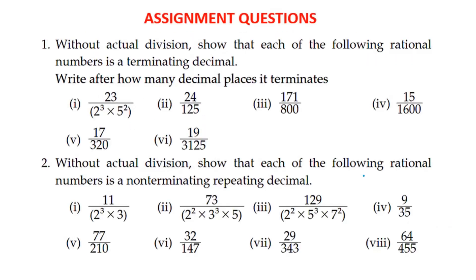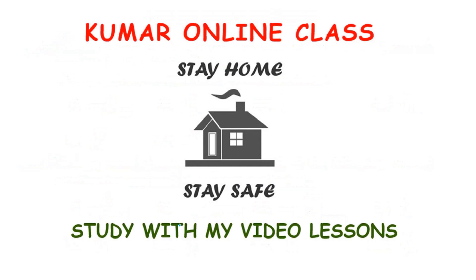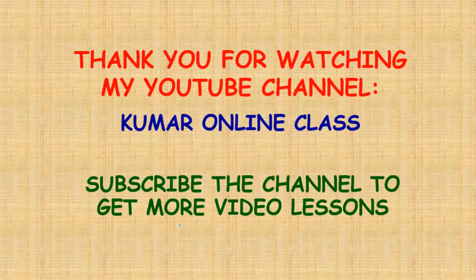Assignment questions: the first is based on terminating decimal expansion — you have to show it is terminating and find how many places it terminates. The second question requires you to prove non-terminating repeating decimal expansion, meaning you have to show the denominator is not in the form of 2^m × 5^n. That's all for today's session. Thank you very much.